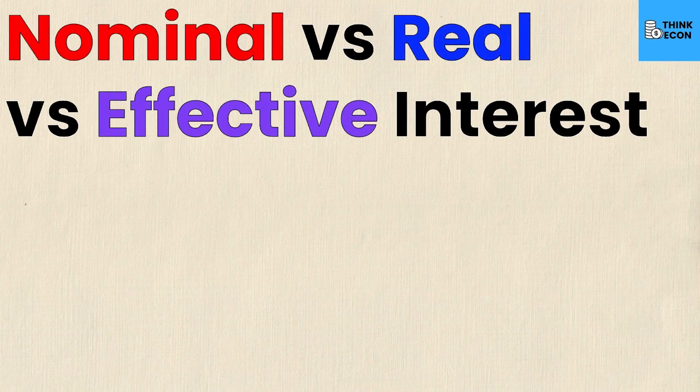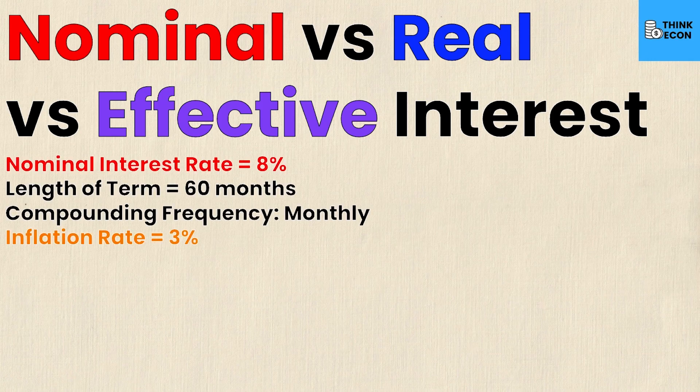Now let's look at all three rates in one cohesive example. Consider an economy where someone is interested in taking a loan. The key information is: a nominal interest rate of eight percent, a loan length of five years or sixty months, a monthly compounding frequency, and an inflation rate of three percent. The nominal interest rate is straightforward — it's given to us: eight percent.